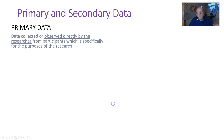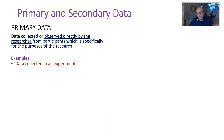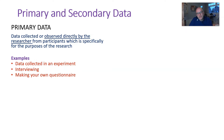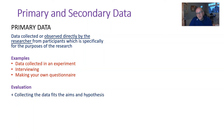Primary data is when the researcher collects the data themselves — they plan the study, they have the aim, they create the tool, and they collect the data themselves. Examples of that include experiments, interviews where the researcher is conducting them, and questionnaires the researcher has made themselves. Pretty much most things are primary data where the researcher has said: here's a research question, I'm going to test it using my own methodologies.